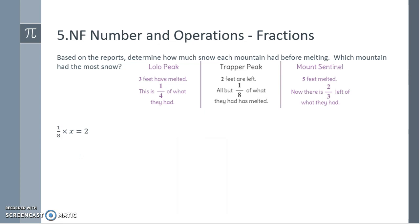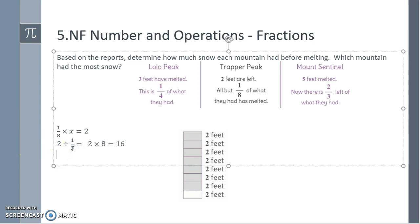Two feet are left at Trapper Peak. All but an eighth of what they had has melted. So an eighth of what they had is 2. Using our rules, 2 divided by 1 eighth, or how many 1 eighths can fit into 2. 2 divided by 1 eighth is the same as 2 times 8, because there are 8 1 eighths per foot. But we have 2 of them. So 2 times 8 is 16.